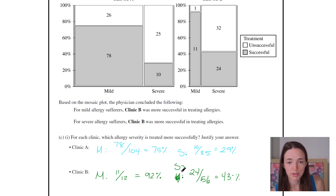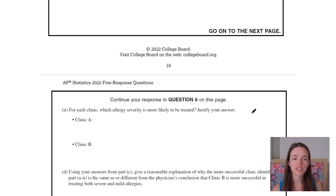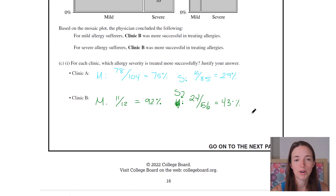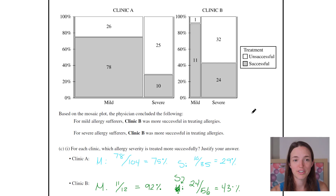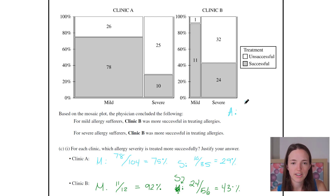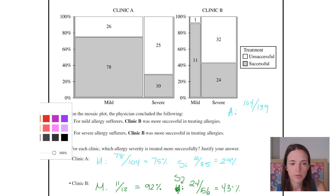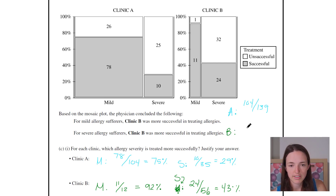The number of typos I've made in this video — my god. Okay, for each clinic, which allergy severity is more likely to be treated? So now we're looking the other direction. For clinic A, mild is 104 out of 139. And for clinic B, mild is 12 out of 68.